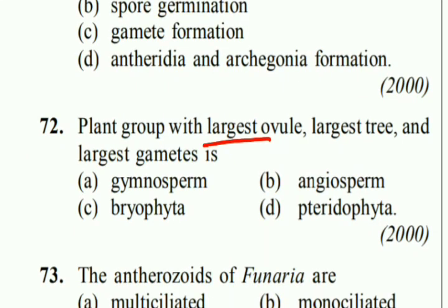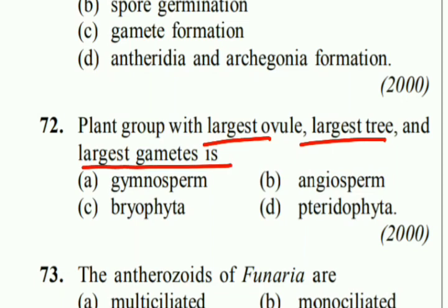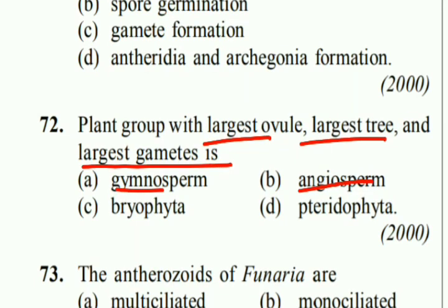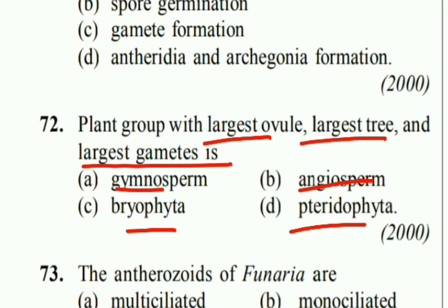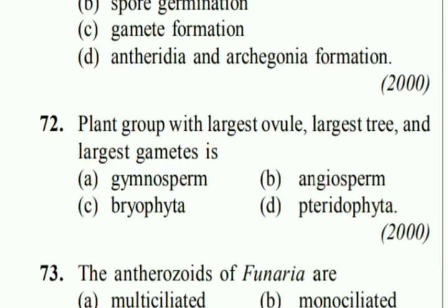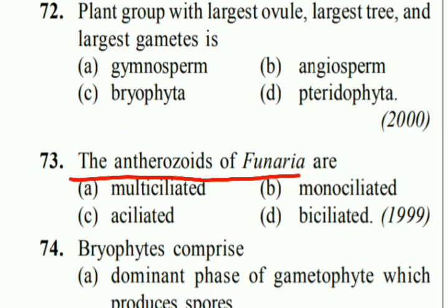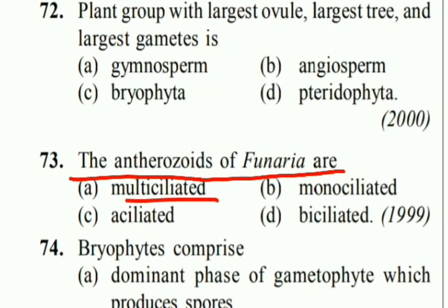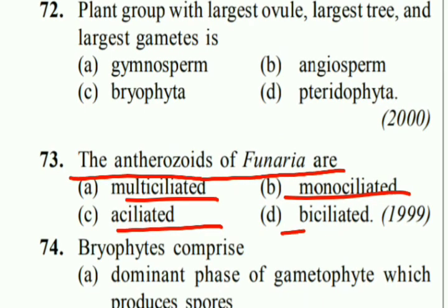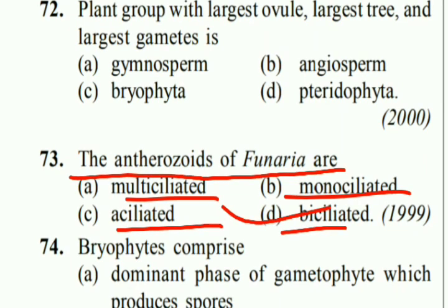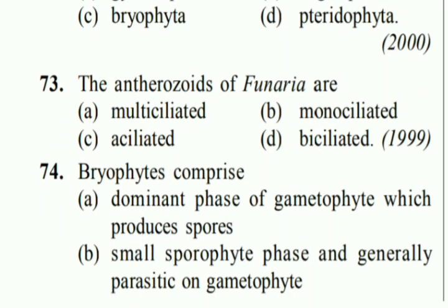The plant group with the largest ovule, largest tree, and largest gametes is Gymnosperms. The antherozoids of Funaria are bicellulated.